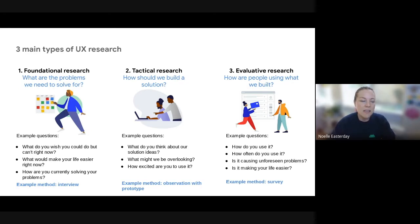So in this case, some examples may include asking, what do you wish you could do, but you can't do that right now? Or what would make your life easier right now? Or how are you currently solving your problems? An example of a method we might use when we're doing this type of UX research is an interview. That's where you sit down with one person or multiple people and you talk extensively, either based on a script of questions you've already written out beforehand, or kind of a more organic type of conversation you might have with someone.